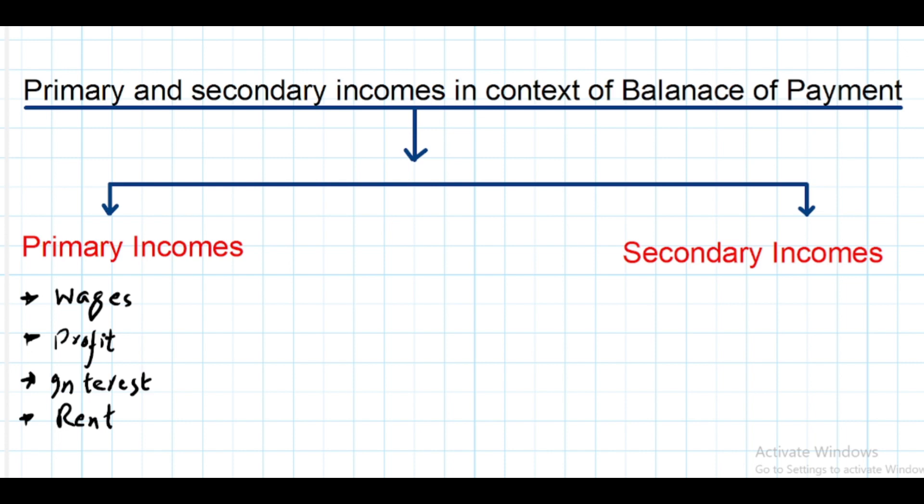Primary income also includes dividend. Dividend is the profit that you receive by investing in shares of some foreign company. So these are the primary incomes: wages, profit, interest, rent, and dividend.